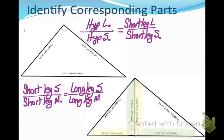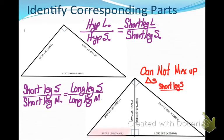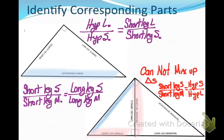Now what you cannot do, the biggest mistake I see, is that you can't mix up your triangles when you're looking at corresponding parts. You cannot say, for example, short leg of the small triangle to short leg of the medium is in the same ratio as hypotenuse of the small triangle to hypotenuse of the large. If I'm going to be comparing my small and my medium, both ratios must be small and medium. I can't then switch to the large triangle. So that is a no-go. That is not correct.